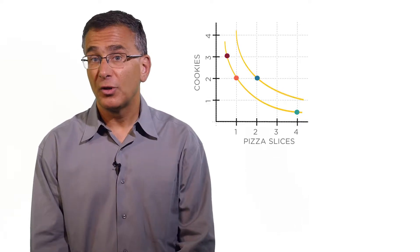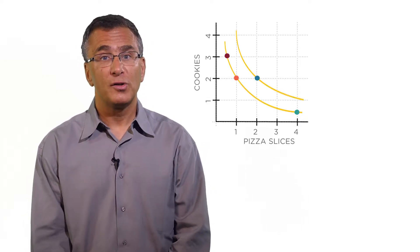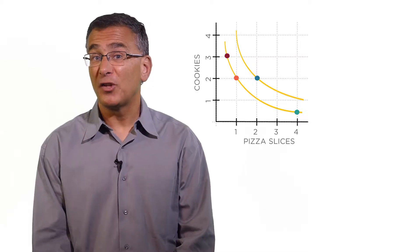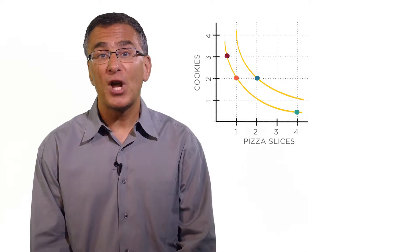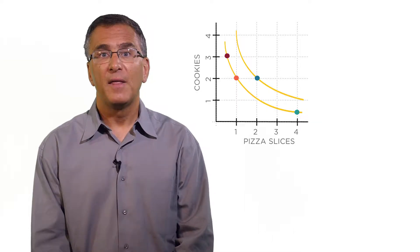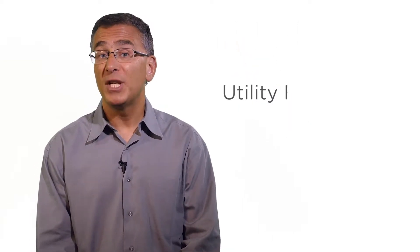In the last lecture, we asked the question, which good should you pick to maximize your happiness? We used indifference curves to compare different bundles of goods. Now we're going to get more precise. We're going to write down a mathematical expression for your preferences. This mathematical expression is called the utility function.